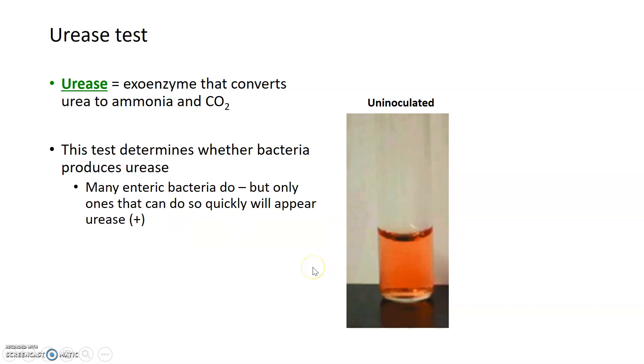But only enteric bacteria that can really degrade that urea quickly will appear urease positive. That's because urease broth is designed to have very minimal nutrients. If they can't convert that urea in the time it takes to eat up those nutrients, they'll show up as urease negative even though they might technically have urease in them. What this test really differentiates between is super fast urease activity and bacteria that produce urease at much lower levels.